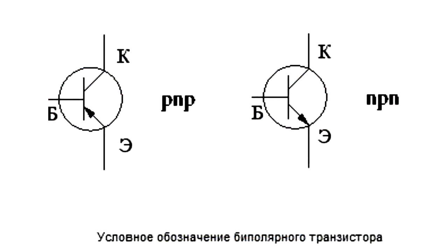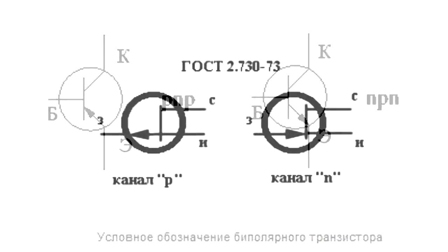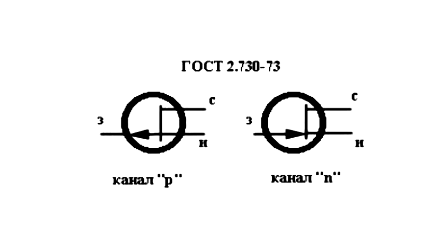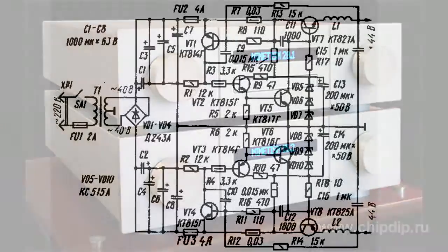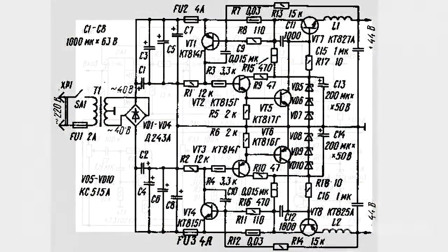A complementary pair includes paired transistors with similar parameter moduli that differ by the polarity of conductivity. A complementary bipower transistor pair includes PNP and NPN transistors, while a complementary unipower transistor pair consists of P-channel and N-channel transistors. Complementary transistor pairs find wide utility in power amplifiers, power supply units, gating and linear circuits, and other assemblies and general-purpose equipment.